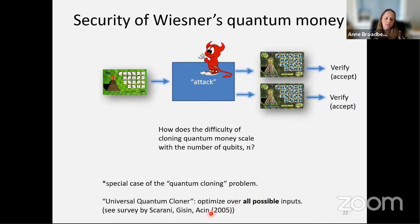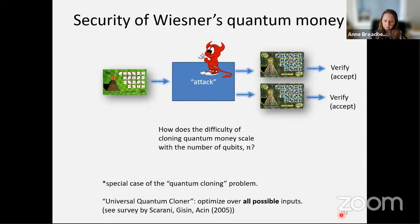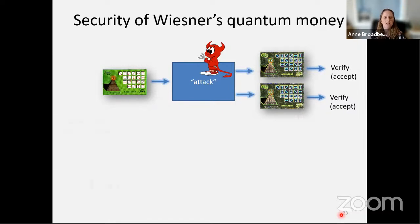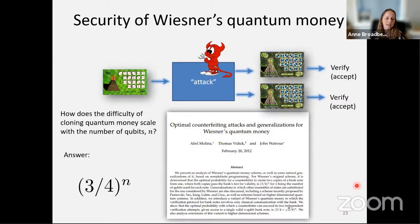Here the best cloner would not necessarily be the universal one, because we have a special guarantee on how the quantum systems are prepared. Although it's a similar problem, the specific problem for security of Wiesner's quantum money had not been solved for a long time. The answer is three-quarters to the n, and it took until 2012 when Molina, Vidick, and Watrous showed the optimal counterfeiting attack using techniques from semidefinite programming.